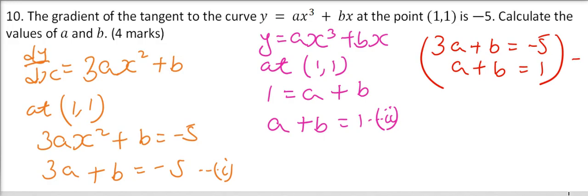We will have 3a minus a that will give us 2a equals minus 5 minus 1, that will give us minus 6. Divide both sides by 2, you get a is minus 3.